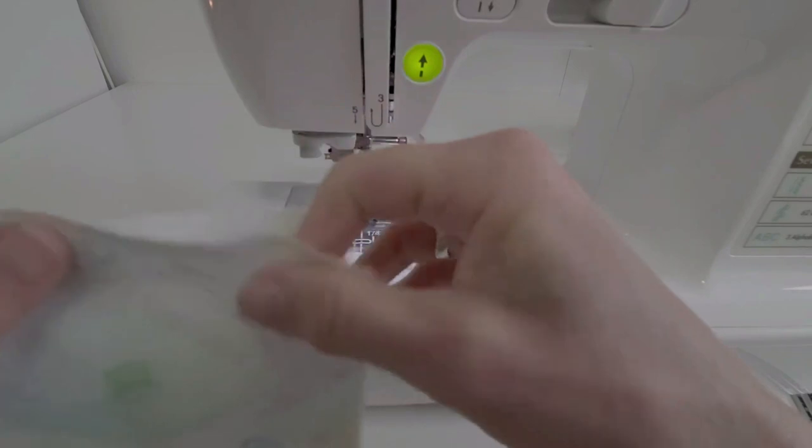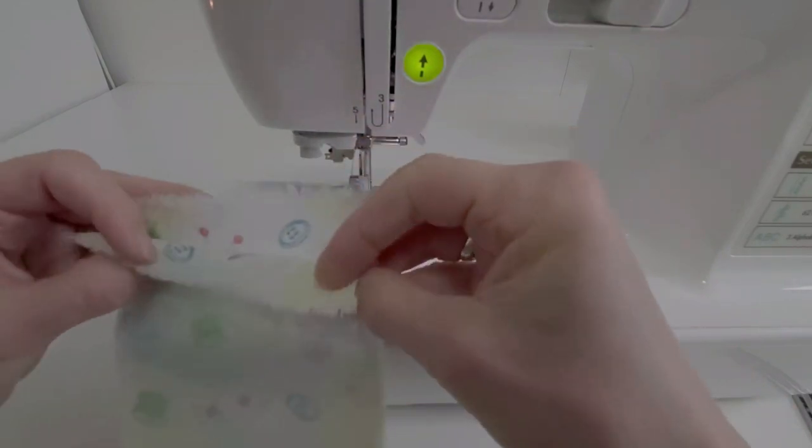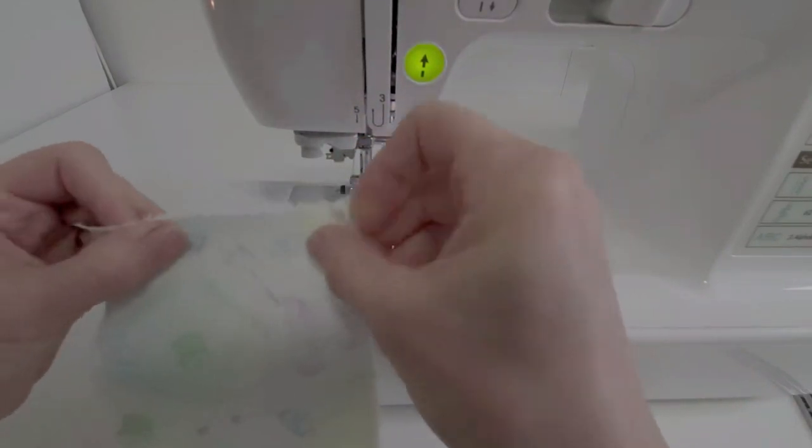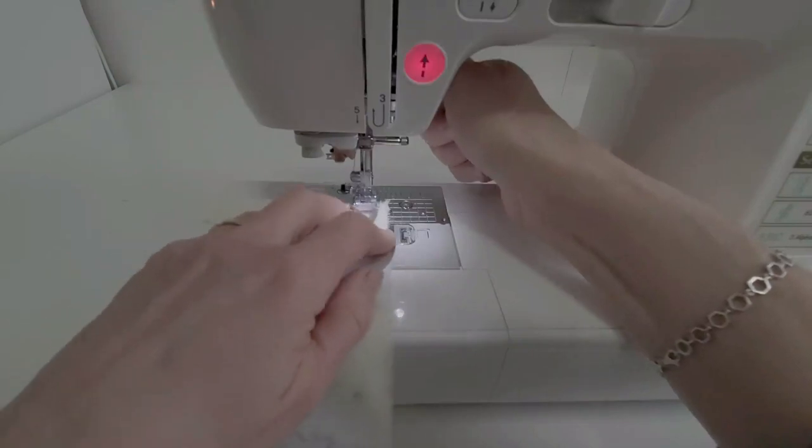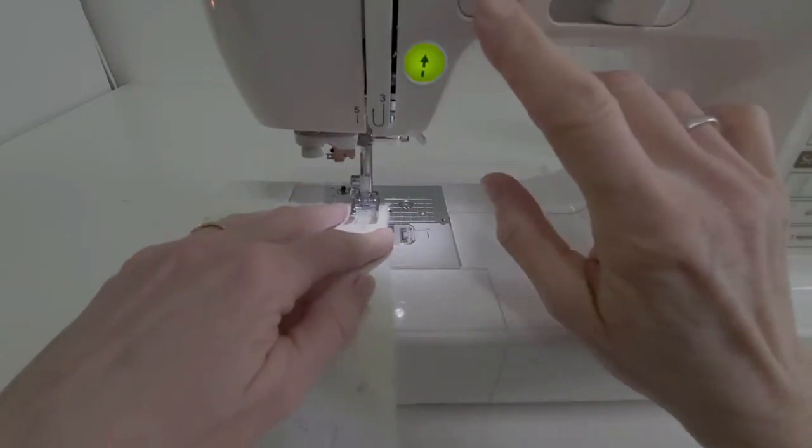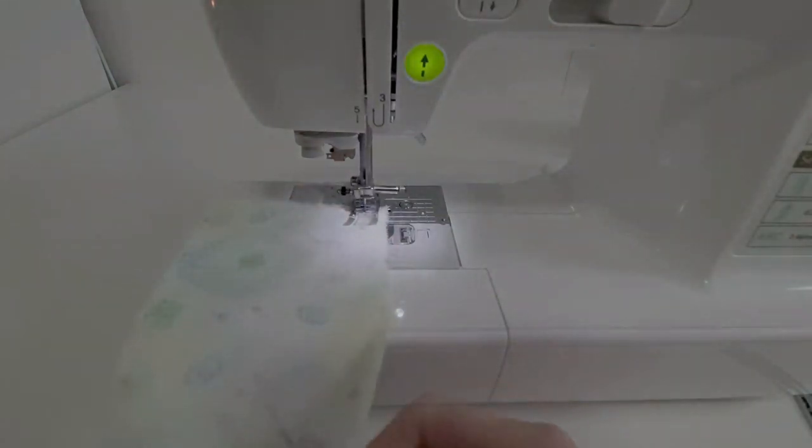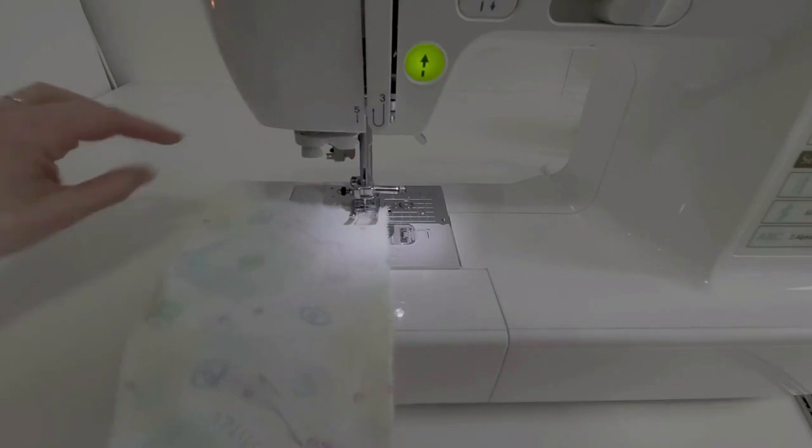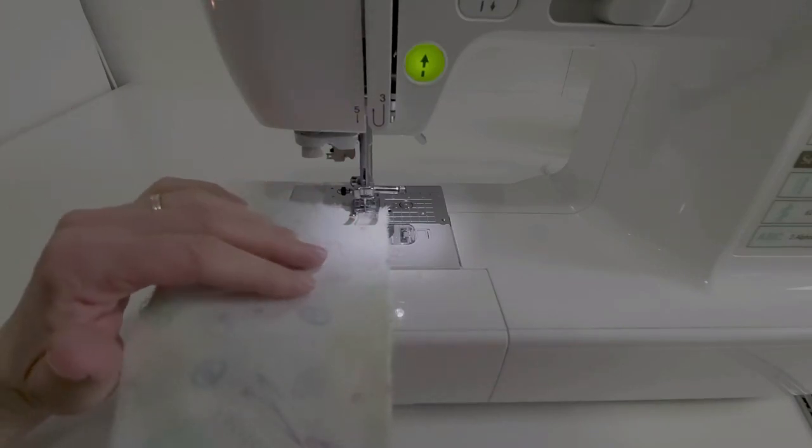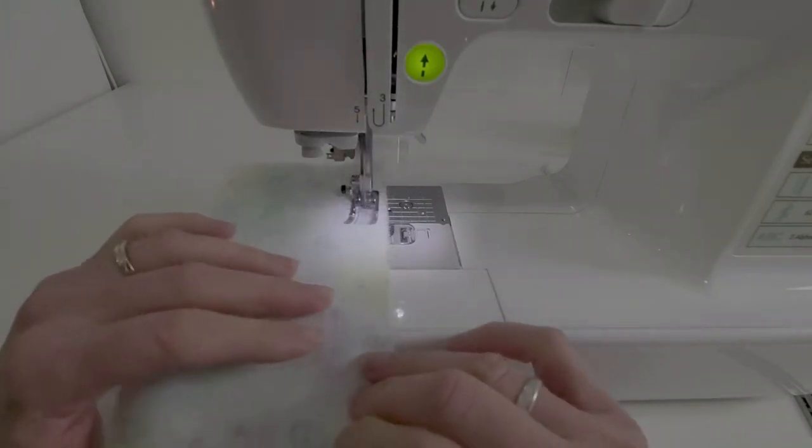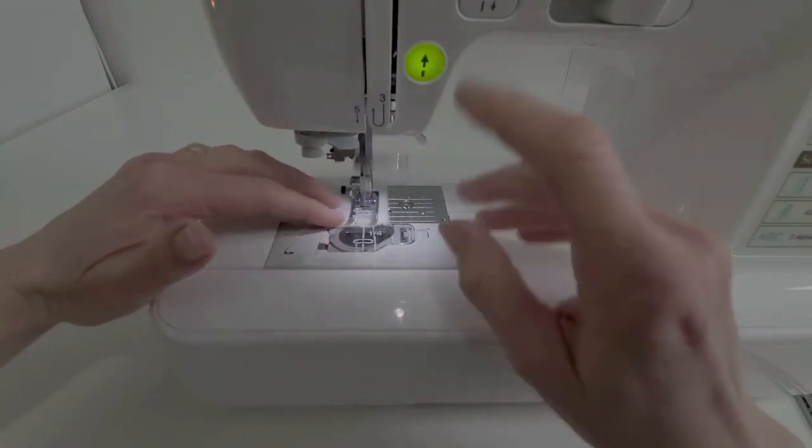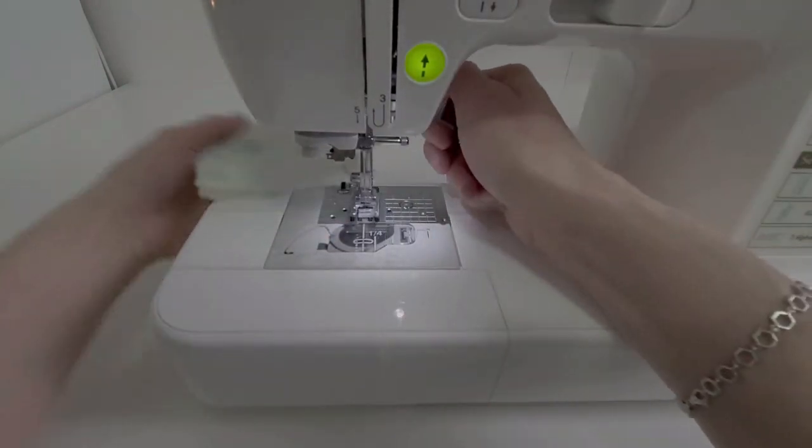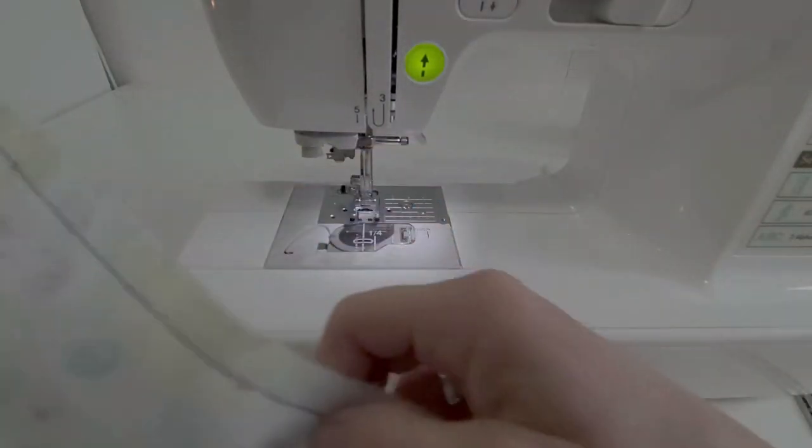The mock flat felled seam. We're going to be starting with the plain seam, this time right sides together. I'm using standard stitch length of 2.5 millimeters and standard seam width of 5/8 or 1.5 centimeters.